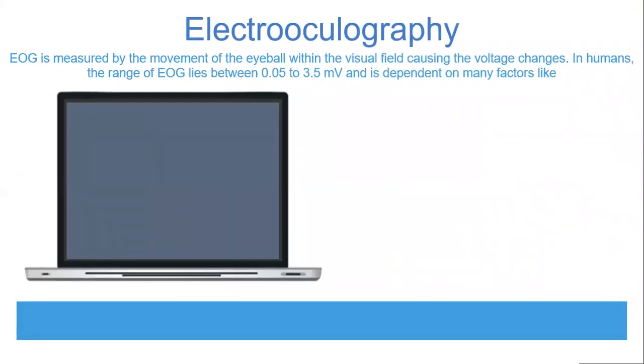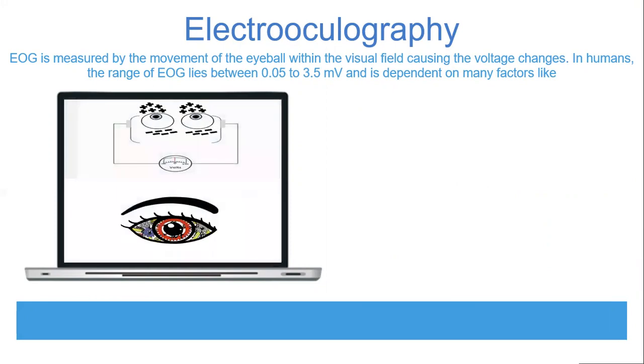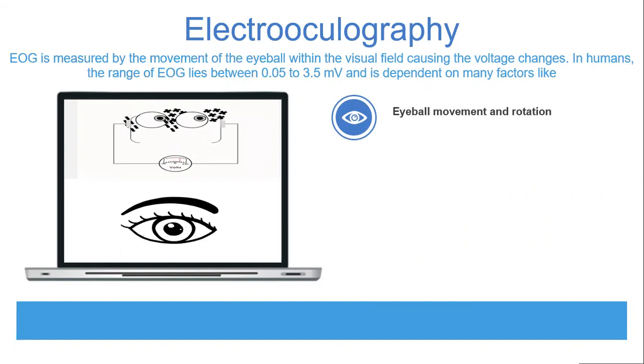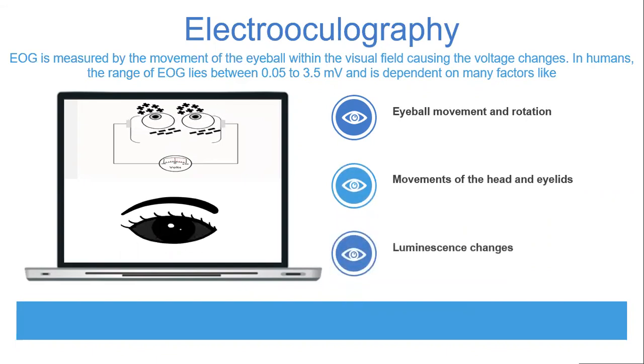What is electrooculography? It is measured by the movement of eyeball within the visual field causing voltage changes. In humans the range of EOG lies between 0.05 to 3.5 mV and it is dependent on factors like eyeball movement and rotation. As you can see in the image, eyeball movement and rotation cause voltage changes that are detected. Other factors include movements of the head and eyelids, and luminance changes like whenever brightness occurs, you quickly blink your eyes. That also causes voltage changes.